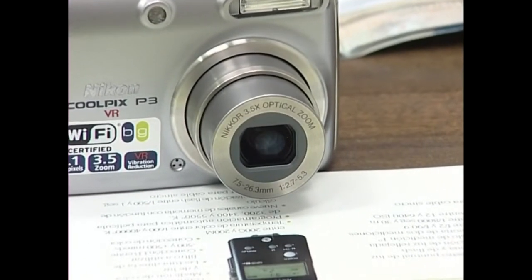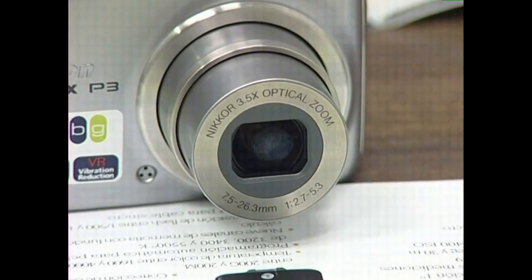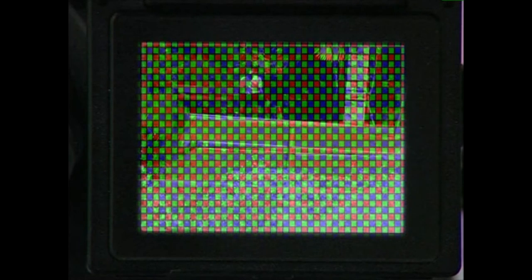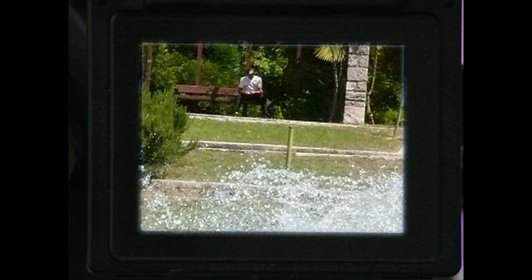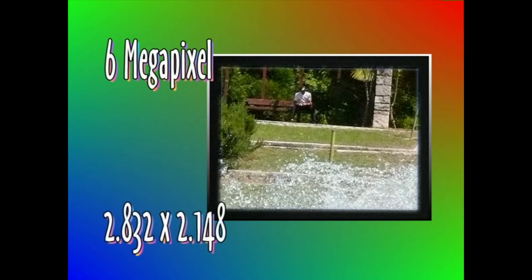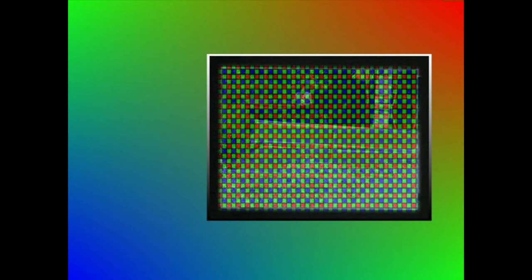Lehen esan dugu objektiboa dela medio, argazki kamera barrura iristen den irudia irudi digital bihurtzeaz arduratzen den mekanismoa, sentxore elektronikoa dela. Sentxorearen ezaugarri nagusia bereizmenaren balioa da. Balio horrek esaten baitigu zenbat puntutan zatitua dagoen irudia. Balio hori zenbaki zehatz batez, 6 megapixel esaterako, edo biderketa batez, 2.000 x 3.248, adierazia ager daiteke.